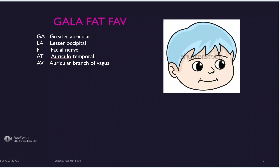Whenever nerve supply of pinna comes up, remember it's close to the cheeks — GALA FAT FAV. Say it two or three times and you'll remember it. This same set of nerves also applies to the external auditory canal and tympanic membrane, so just writing down the names can get you points in the exam. I hope you liked this video — please like, share, and subscribe for more mnemonics. Thank you so much, bye!